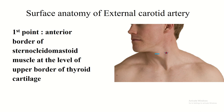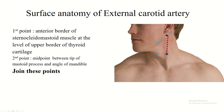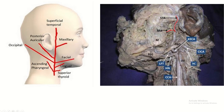Surface anatomy of the external carotid artery. First point: at the anterior border of the sternocleidomastoid muscle at the level of the upper border of the thyroid cartilage. Second point: midpoint between the tip of the mastoid process and the angle of the mandible. Join these two points.